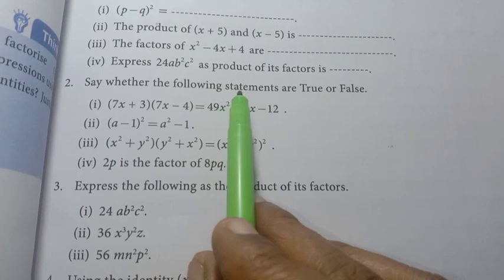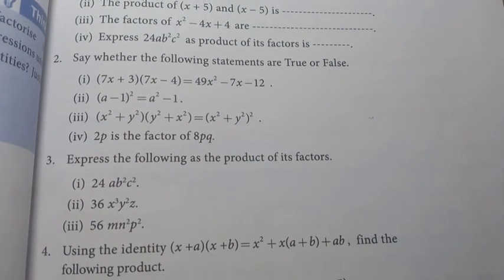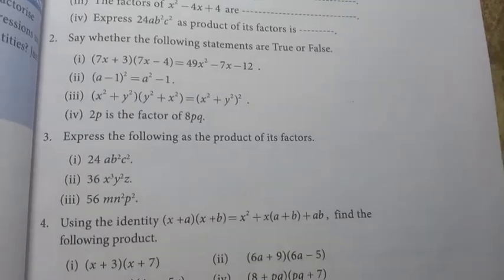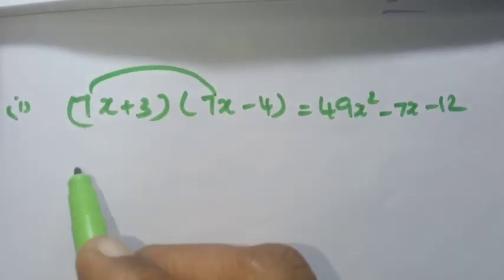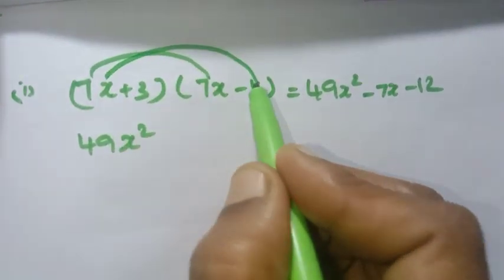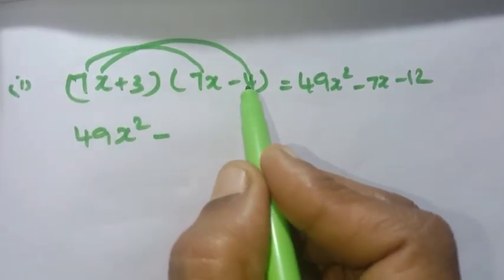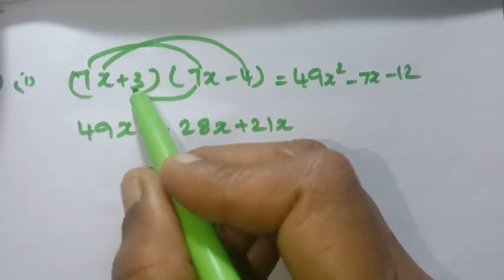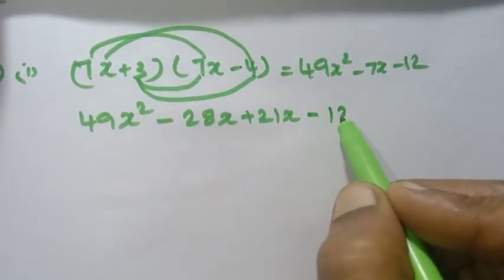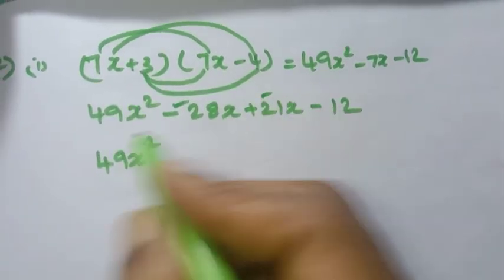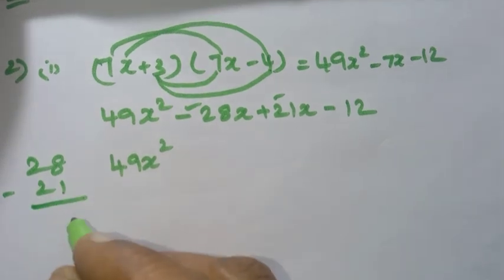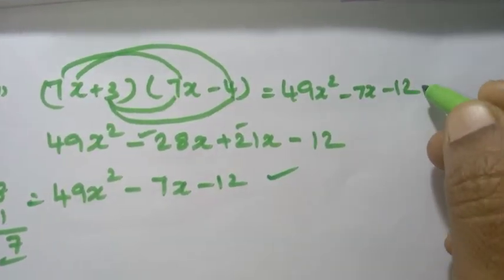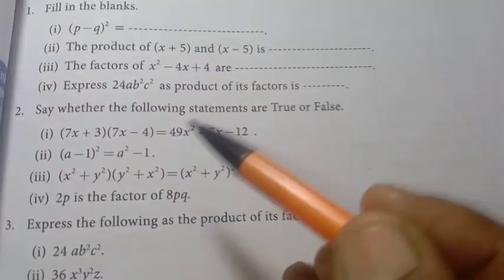True or False. First: 7x plus 3 into 7x minus 4 equals 49x squared minus 7x minus 12. We apply the identity x plus a into x plus b with x equal to 7x, a equal to 3, b equal to minus 4. Working it out gives 49x squared plus 7x times 3 minus 4, which is minus 7x, minus 12. The statement is true.